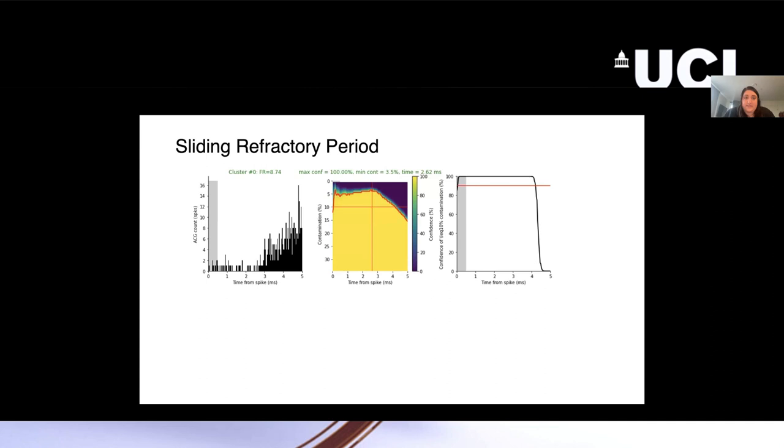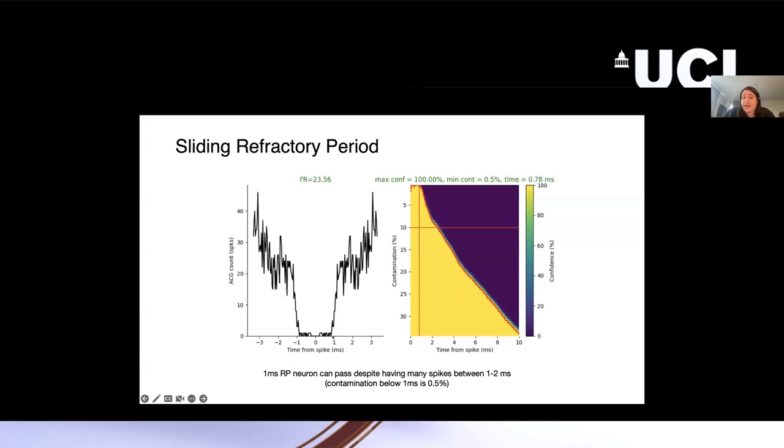What this allows us to do is to include neurons that have potentially shorter refractory periods. This is an example neuron that looks like, by eye, it has maybe a one millisecond refractory period, and it's pretty clean within that. But would certainly fail a previous metric with setting a refractory period of two milliseconds, because it has a lot of spikes here. But when we do our matrix computation and check the confidence, we're more than 90% confident that there's no contamination at these values here, and so we're able to pass this neuron.